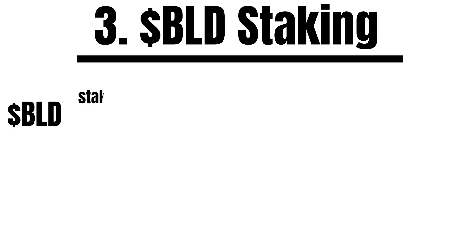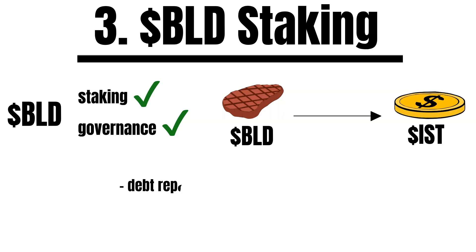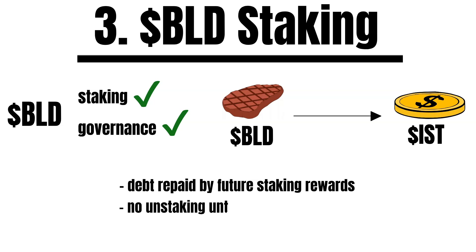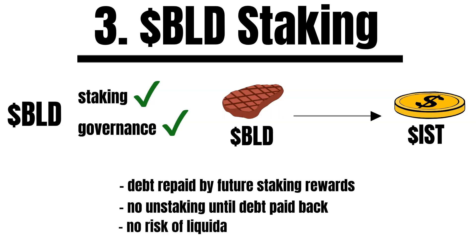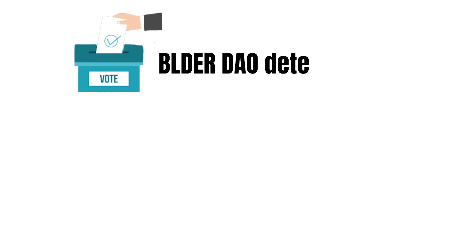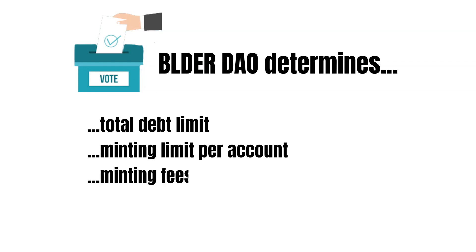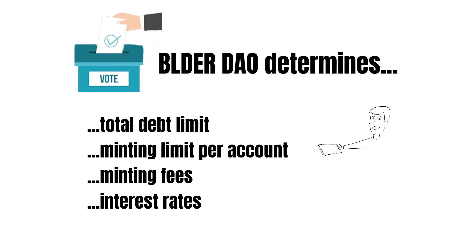The third way to mint IST is by staking BLD, the native staking and governance token of Agoric. BLD stakers can lock up a portion of their staked BLD to mint IST. The debt can be repaid by future IST staking rewards. BLD that is locked up remains staked and continues to earn staking rewards. However, users cannot unstake their BLD nor withdraw their staking rewards until they pay back the minted IST plus fees. Unlike minting IST through a vault, locked-up BLD is not subject to liquidation. The Builder DAO determines parameters for IST staking, including the total debt limit, minting limit per account, minting fees, and interest rates.